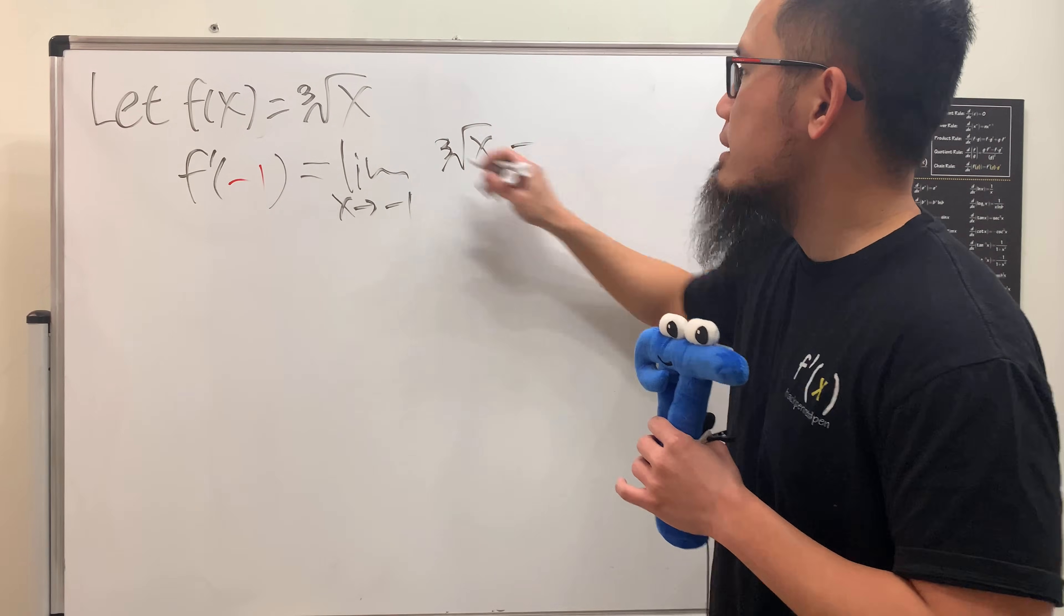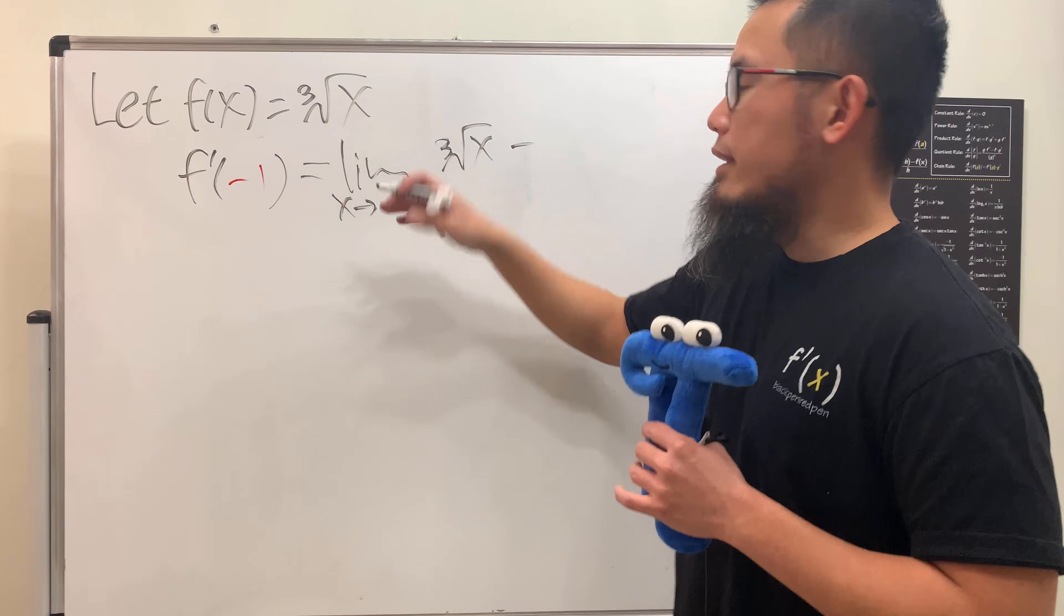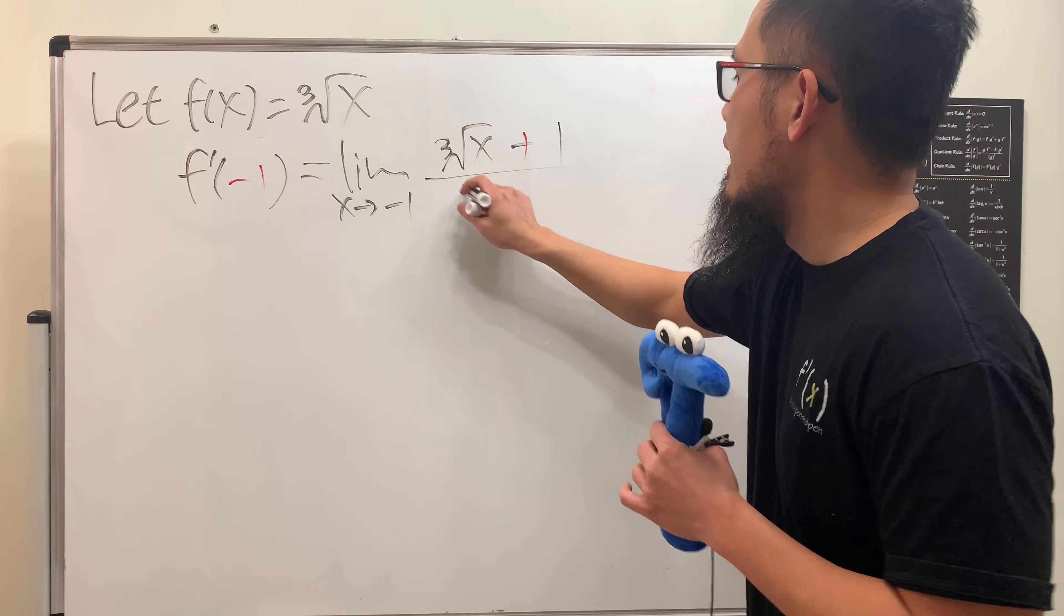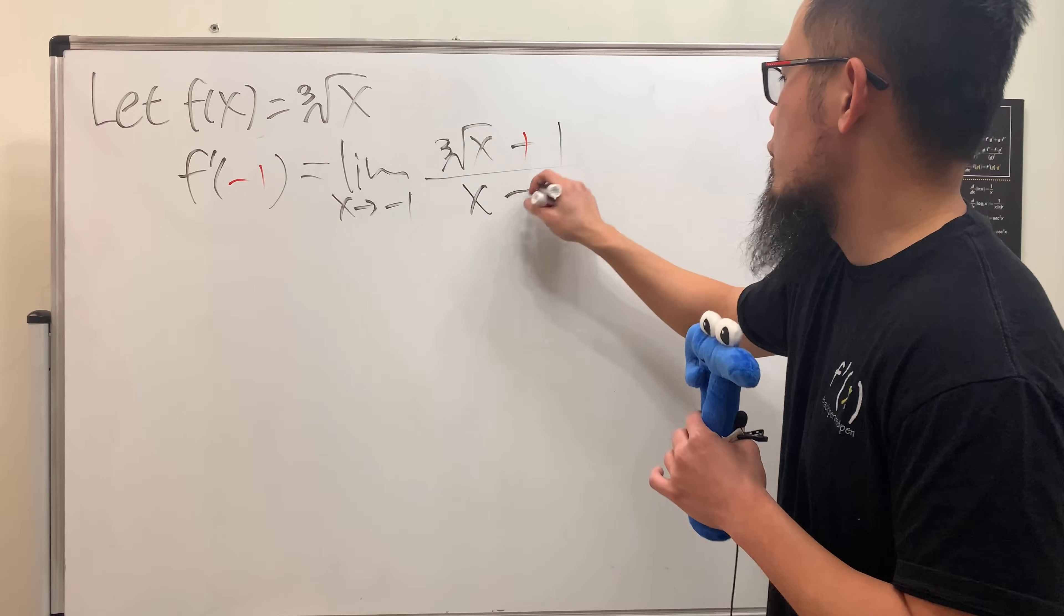which is the cube root of x, and then minus, well, you have to put negative 1 right here, and the cube root of negative 1 is actually just negative 1, so it becomes plus 1 right here and divided by x minus minus 1, which is going to be plus 1 right here, right?